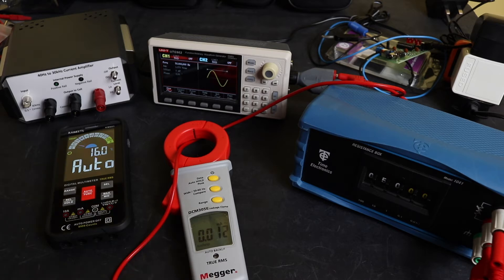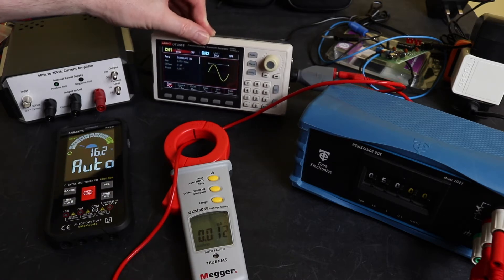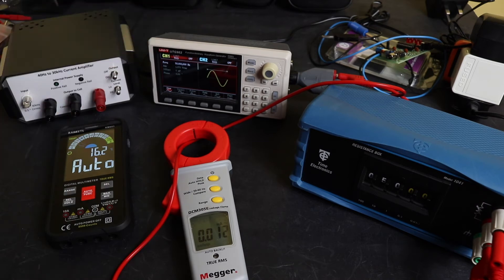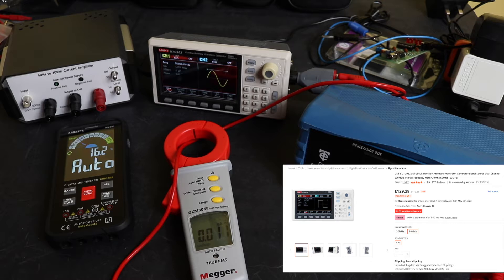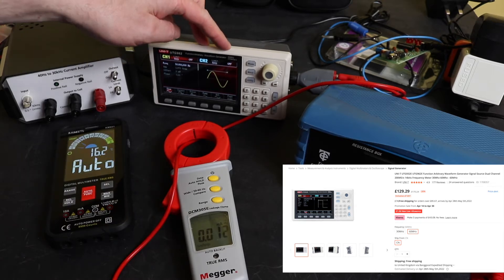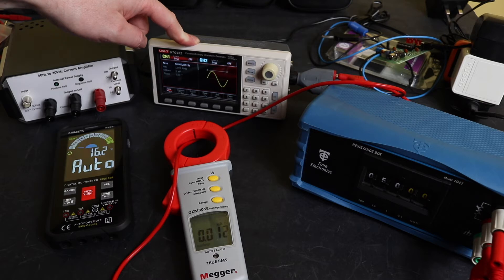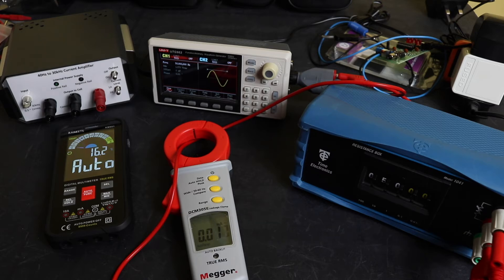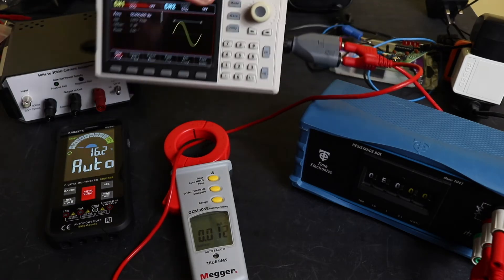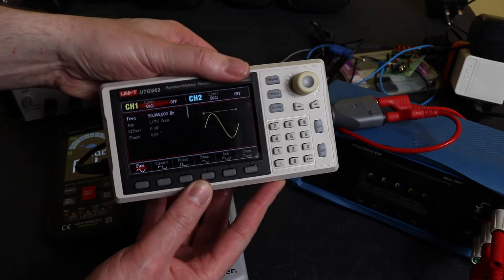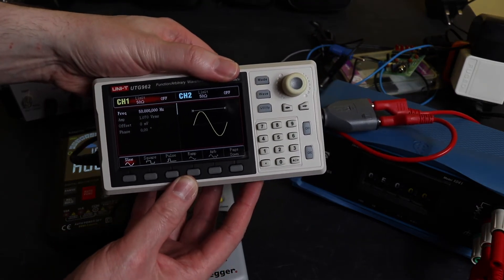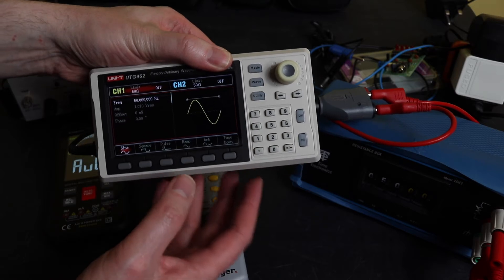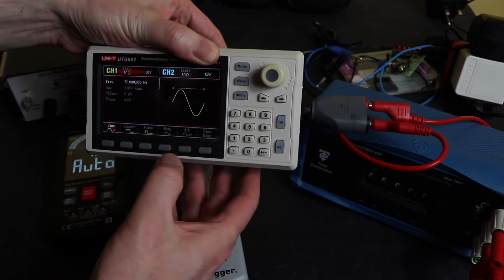What I have here is the UTG962 waveform generator from UniT. It's available in the UK for around about 110 pounds. This one is a 60 megahertz output. They also do I think it's a 932 unit that has a 30 megahertz output and that will be a little bit cheaper than this one. At the moment the output is set up to 50 Hertz, just over one volt output.